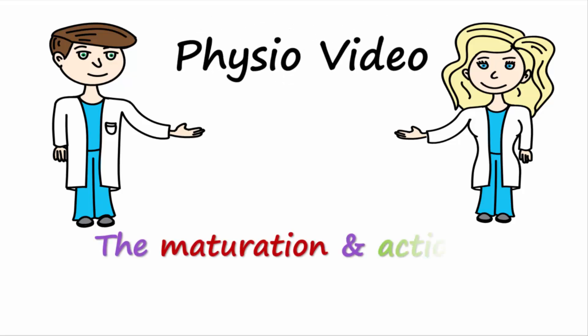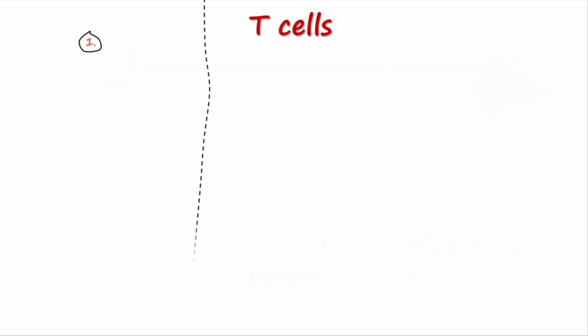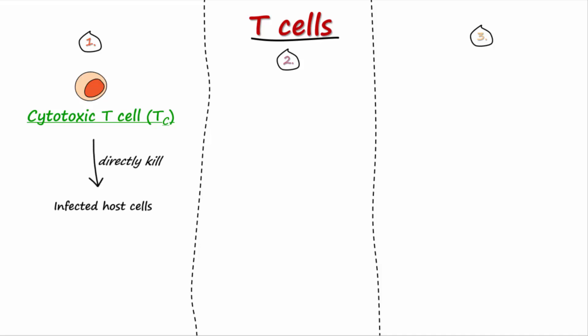Let's discuss the maturation and actions of subsets of helper T cells. There are three main classes of T lymphocytes or T cells including cytotoxic T cells which directly kill host cells that are infected by microbes, T regulatory cells which suppress the immune response by inhibiting helper T cells, dendritic cells and cytotoxic T cells,